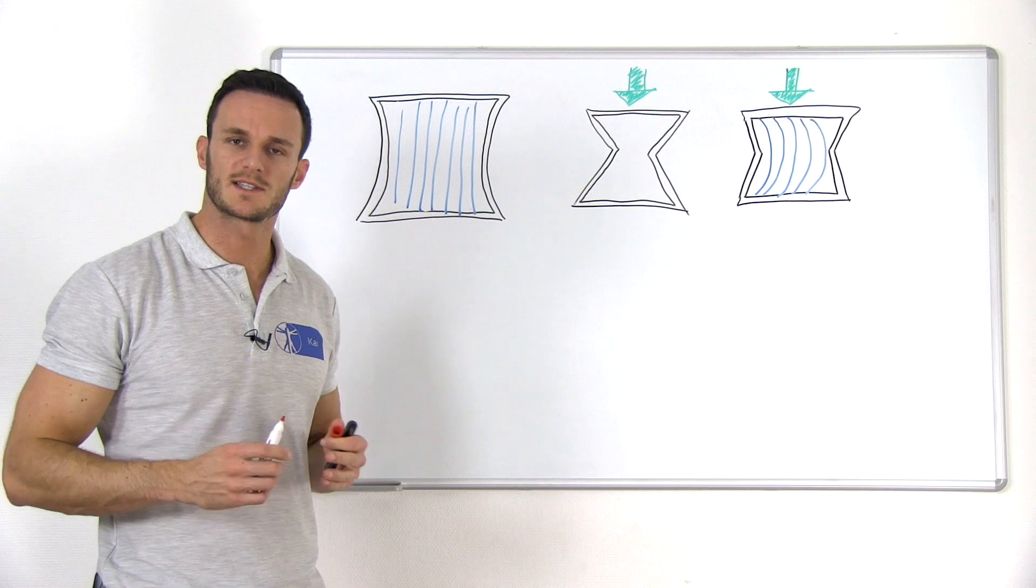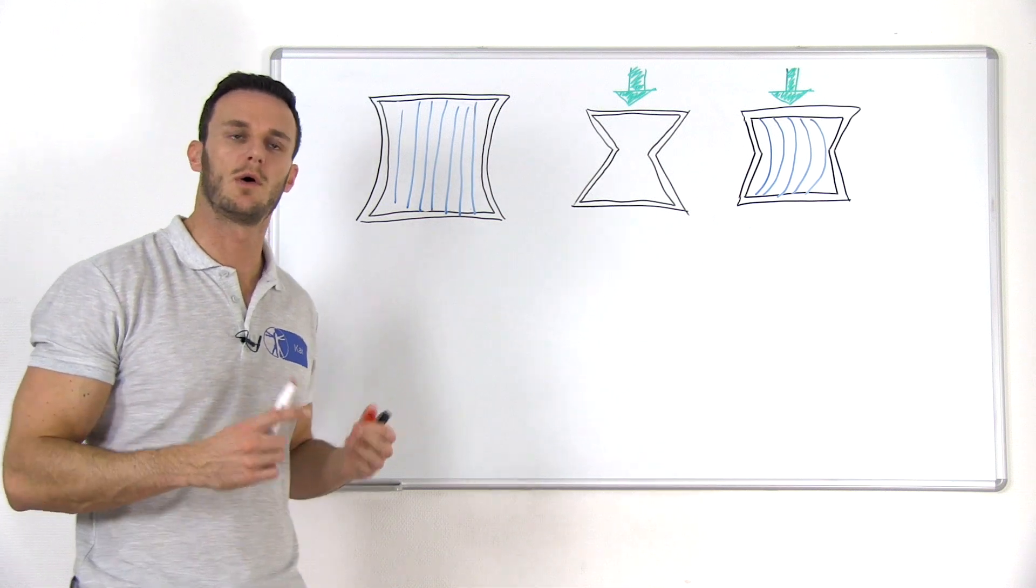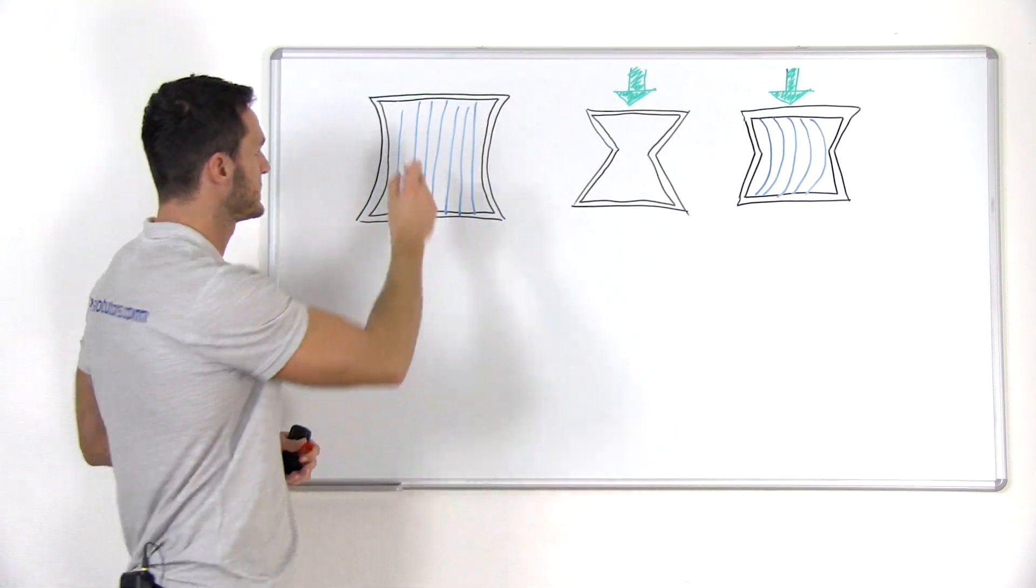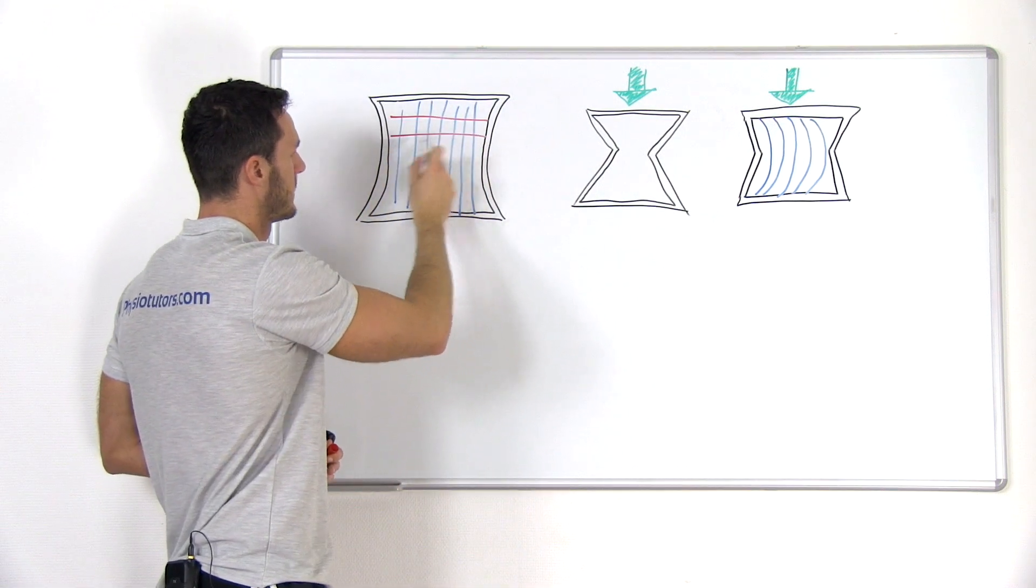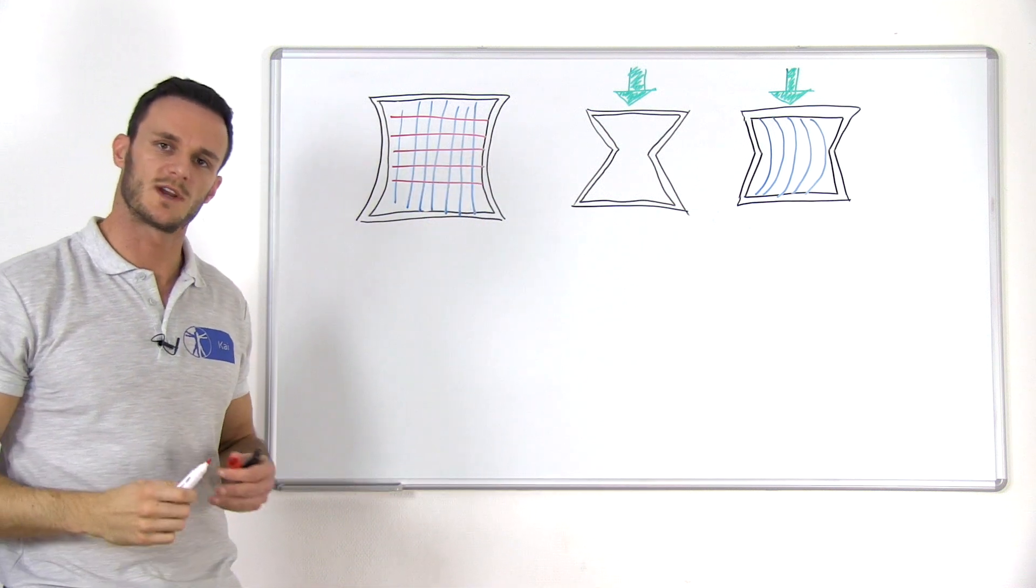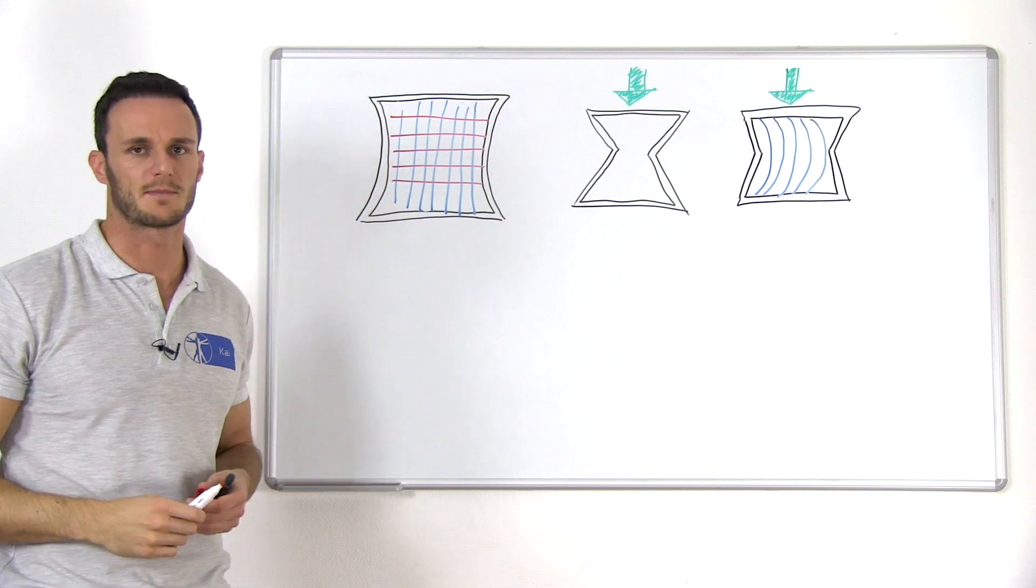The problem with struts, however, is that they will start to bow under longitudinal pressure. But if we introduce cross-beams, they will hold the struts in their place and prevent them from bowing and collapsing.